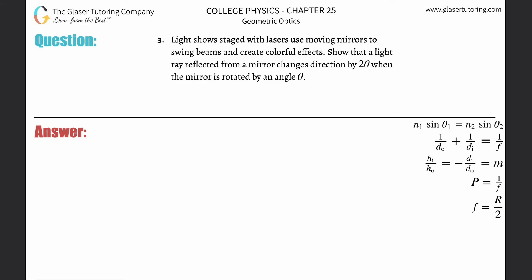Number three: light shows on stage with lasers use moving mirrors to swing beams and create colorful effects. We need to show that a light ray reflected from a mirror changes direction by two theta when the mirror is rotated by an angle of theta.